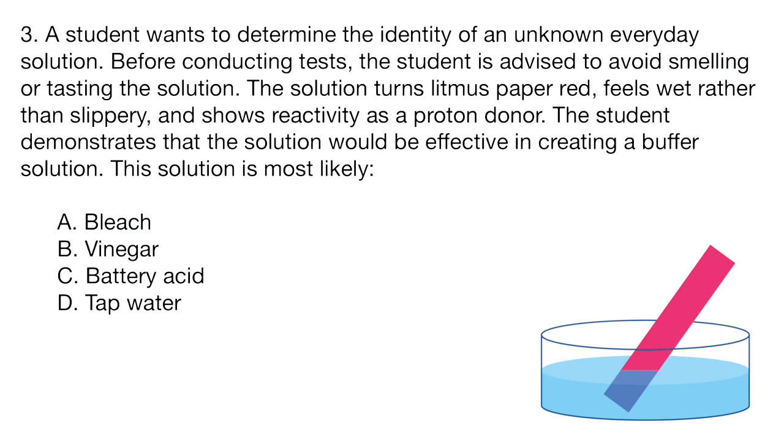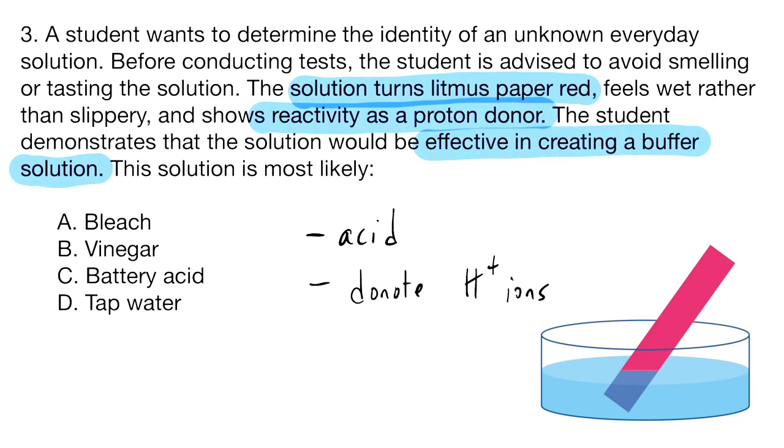So in the problem, we get a bunch of characteristics of this solution. So the very first one that really sticks out to me is that the solution turns litmus paper red. And so what that means is that we are looking for an acid, because acids turn litmus paper red, and bases turn litmus paper blue. We also see that it shows reactivity as a proton donor, and it's going to be effective in creating a buffer solution. And so what a proton donor means is that it's just going to be able to donate hydrogen ions. And a buffer solution, or at least an effective buffer solution, means that we are going to be working with a weak acid.